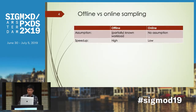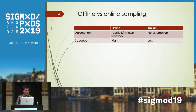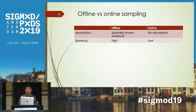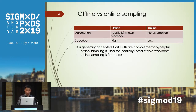Sampling methods fall into offline and online sampling. The offline sampling makes assumptions that the workloads are known or partially known, so they can prepare the samples in advance — the speedup is high. For online sampling, no assumptions are made about the workloads and samples are generated during query execution, so the speedup is low. Both methods are complementary: offline sampling is used for predictable workloads, while online sampling handles the rest.